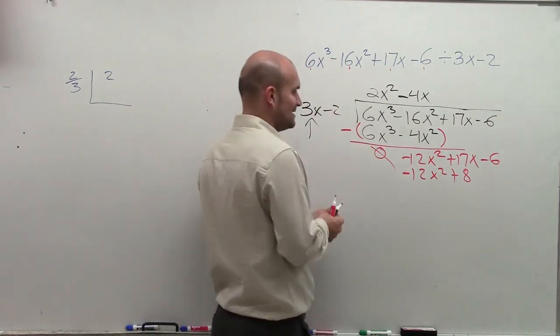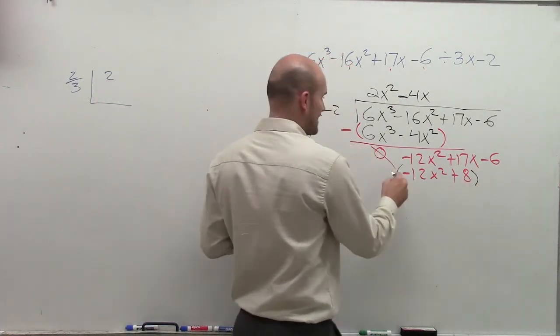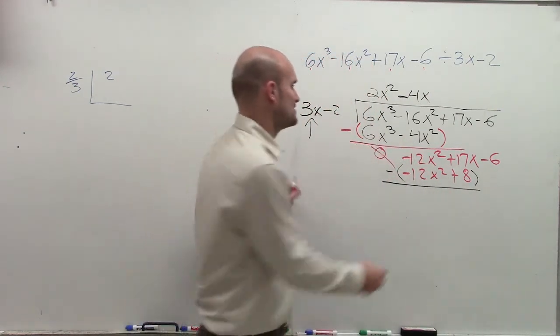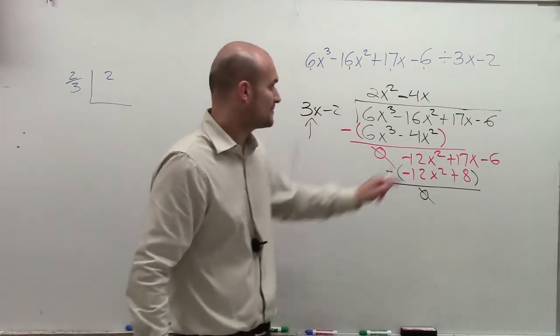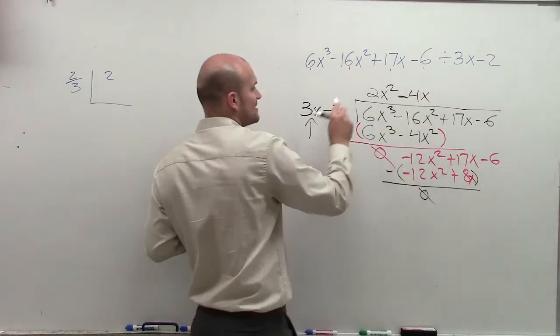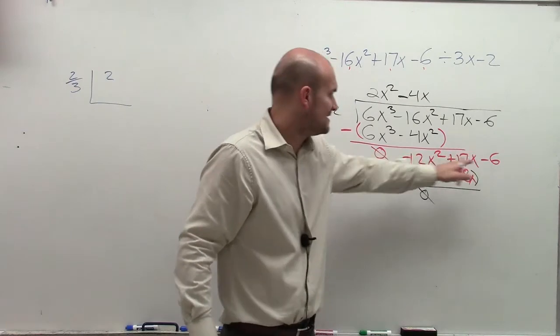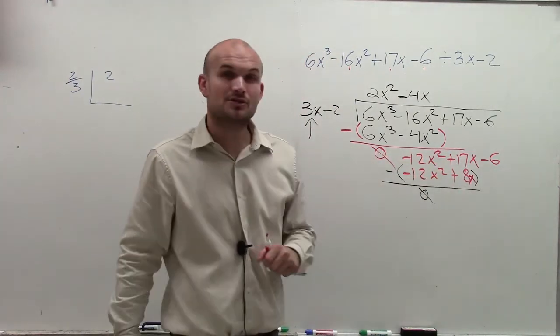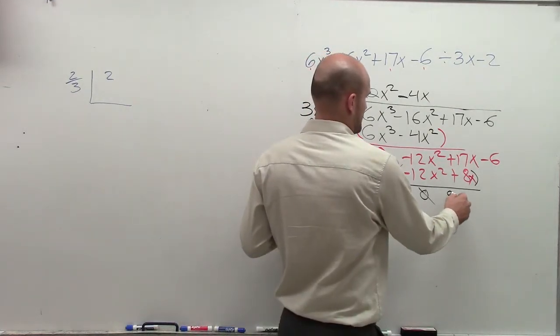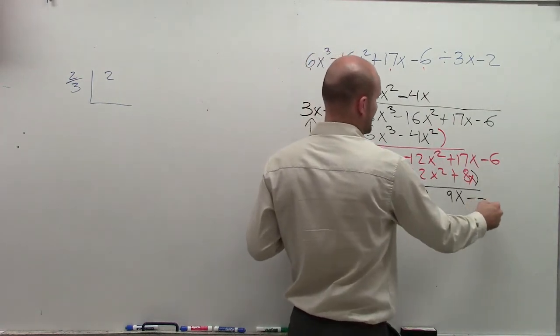So now we, again, subtract the two rows, right? But remember, put in parentheses and subtract. Negative 12x squared minus negative 12x squared is going to give you 0x squared, which is 0. 17x minus 8x, right? Because negative 4x times negative 2 is a positive 8x. So 17x minus 8x is now going to give you a 9x. And then negative 6 minus 0 is just going to be negative 6.